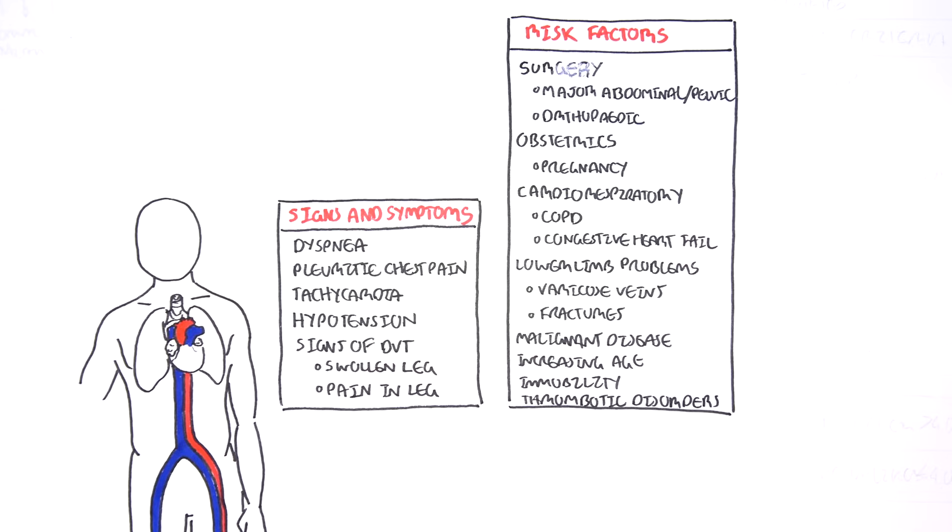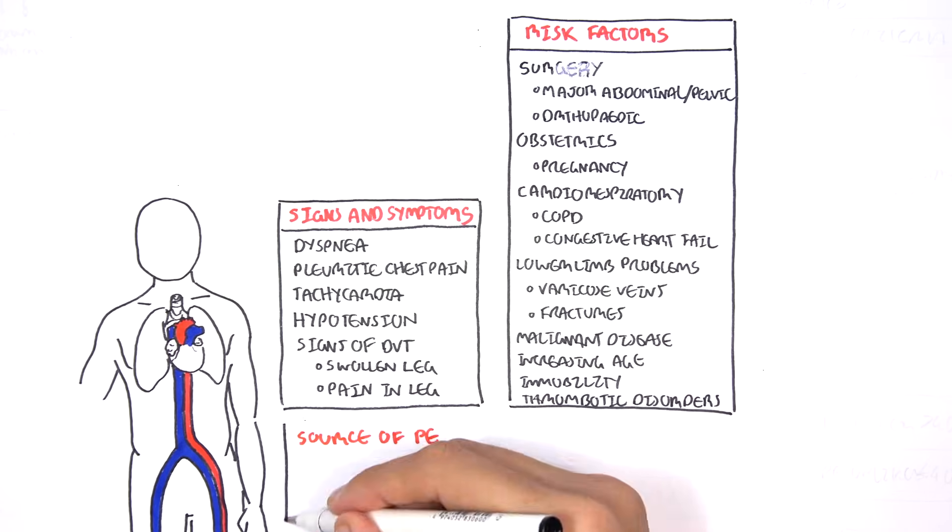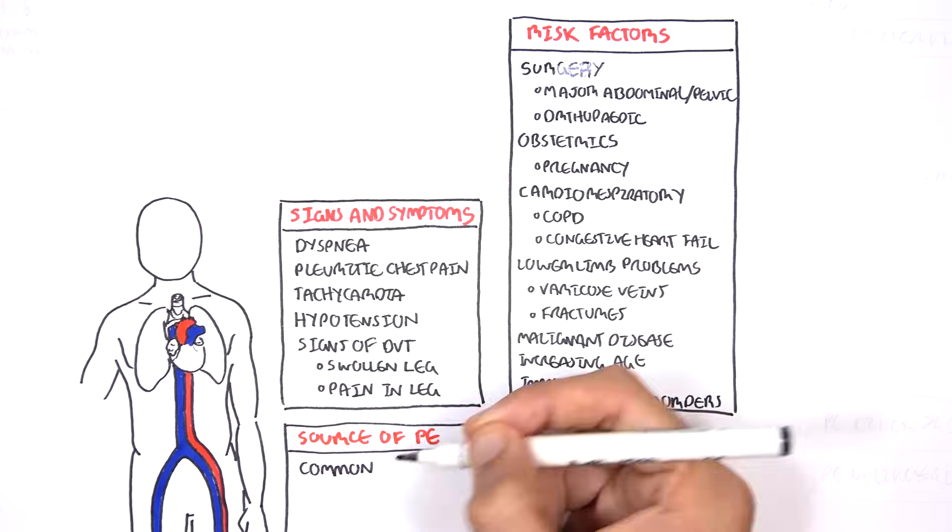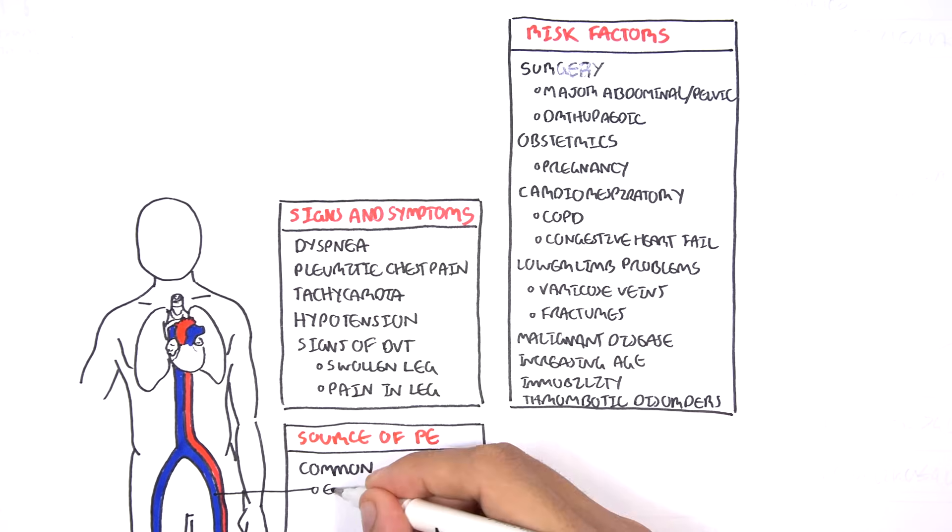Thrombotic disorders is what we will focus on because as I mentioned, 95% of cases of pulmonary embolism are a result of thrombosis from the deep veins. So where do these thrombi occur?